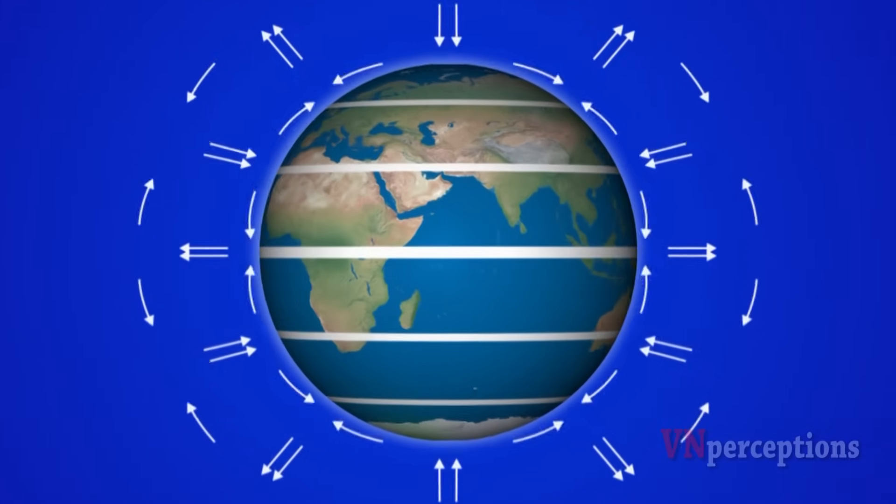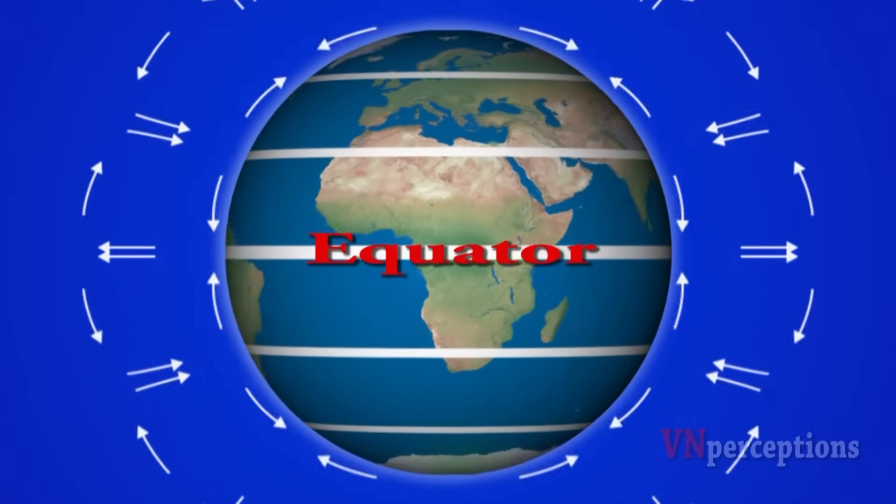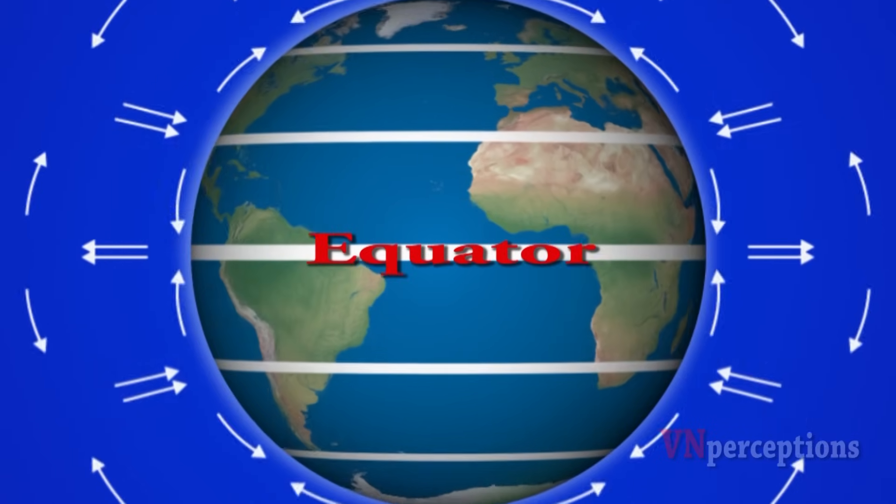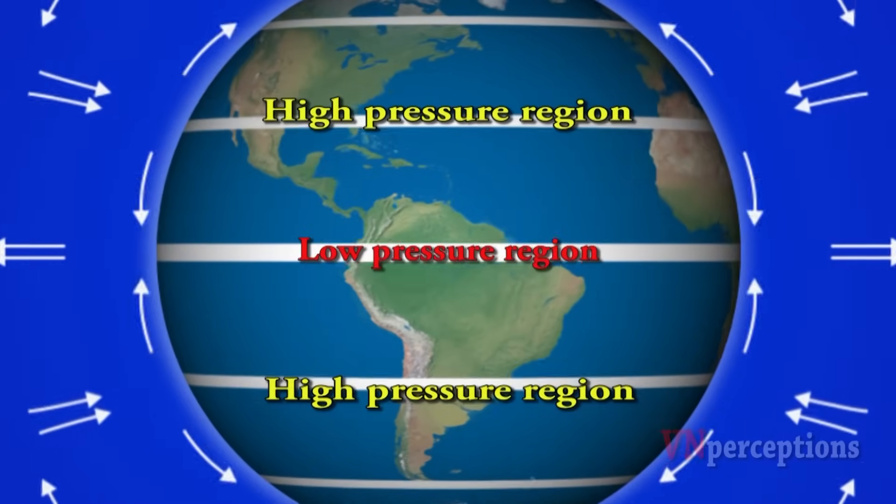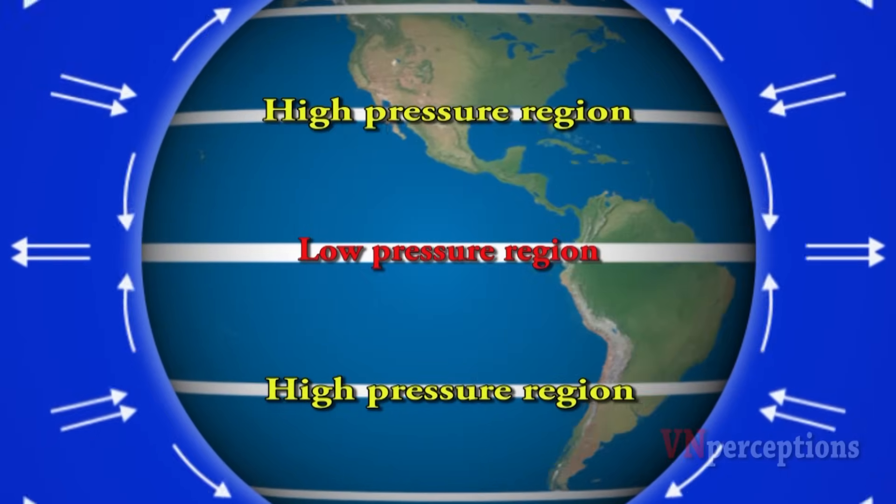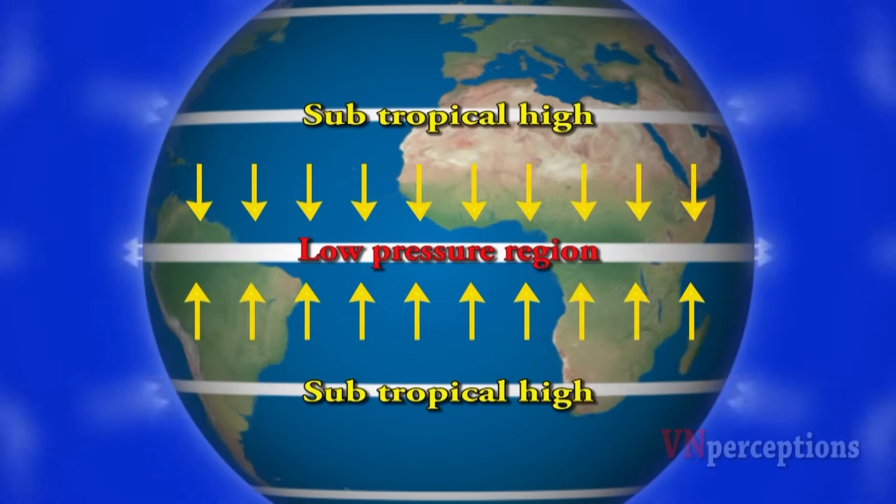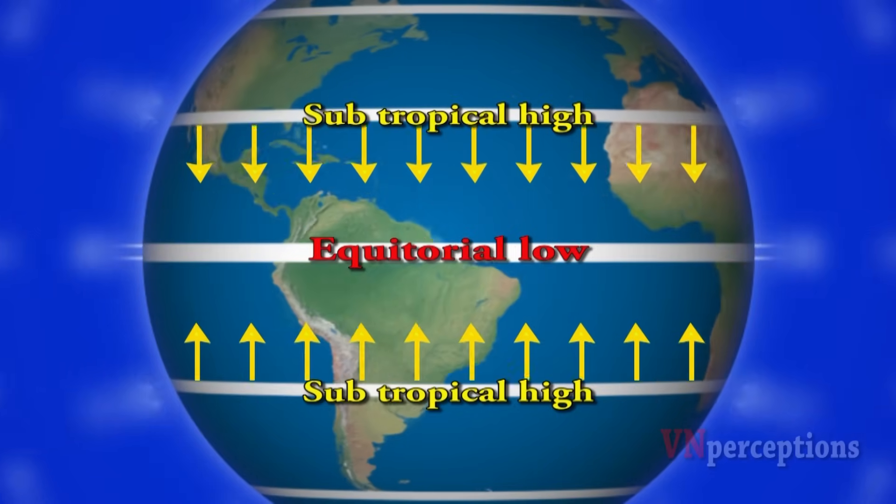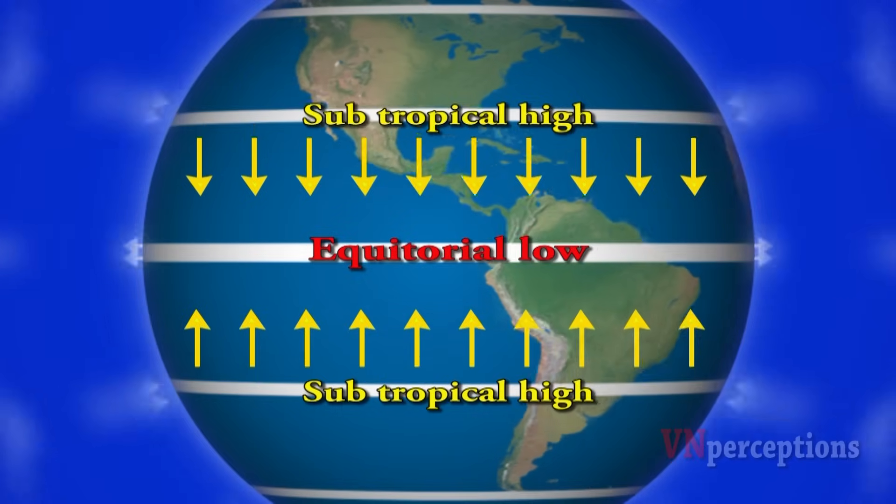On the surface of the earth along the equator, the winds move from high pressure regions to low pressure regions. That is from subtropical highs to the equatorial low in the northern and southern hemisphere.